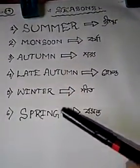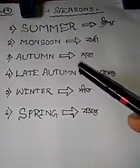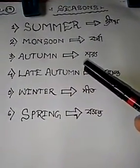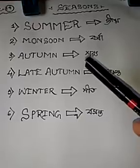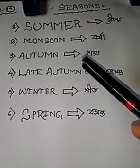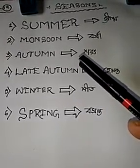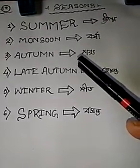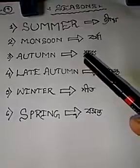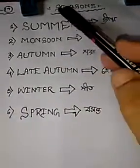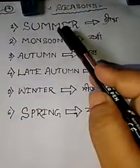So there are six seasons in a year. Though nowadays we find only three seasons or two seasons actually. So whatever, this is the total six seasons.